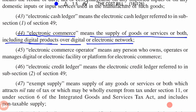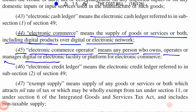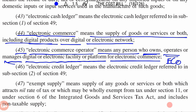Section 2, Clause 45 — Electronic Commerce Operator — means any person who owns, or operates, or manages a digital or electronic facility or platform for electronic commerce. Any person who owns, operates, or manages an electronic facility or electronic platform for e-commerce is called an Electronic Commerce Operator, or ECO. So like Amazon, Flipkart — what are they? They are Electronic Commerce Operators. Ola, Uber — these are all Electronic Commerce Operators. They own, operate, and manage electronic platforms or electronic facilities.